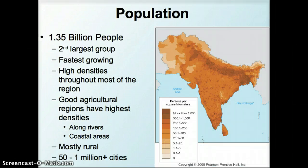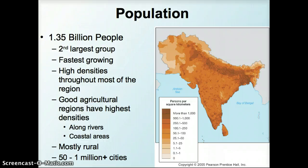India is another part of the world that has very large populations — 1.3 billion people, the second largest after China. This population, unlike China's, is not stabilizing but still quickly growing. There are very high densities of population. If you look on the map on the right, the areas in the darkest red have more than a thousand persons per square kilometer, especially along the northern part of the country.